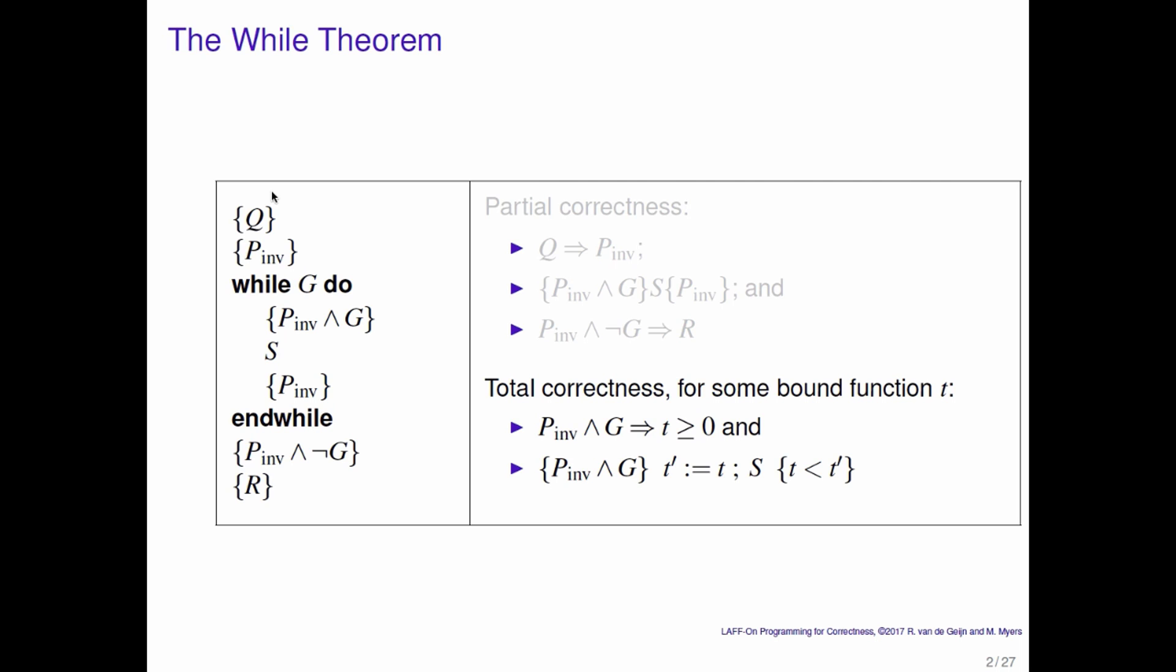The second part there says that if we are in the loop, if the loop invariant and the loop guard are true, then we're going to think about what this bound function is at the top of the loop. We're going to assign it to a dummy variable, a temporary variable in which we're going to hold the value as it was. Then we're going to execute the body of the loop, that's the command s, and then we're going to require for the bound function to have decreased in value, which means that it now needs to be less than this t prime that was the temporary variable that held the original value at the top of the loop. So that's the approach.